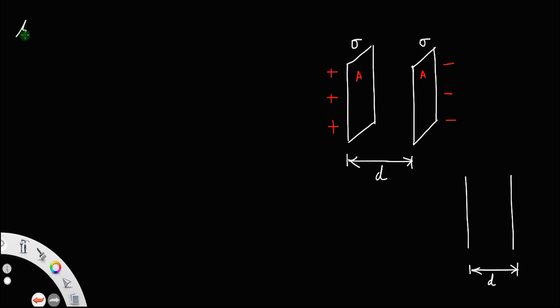We have surface charge density represented by the letter sigma equal to charge per unit area. Charge on both the plates remains the same, although they are of opposite sign, but the magnitude remains the same. Area also remains the same, so sigma is the same.